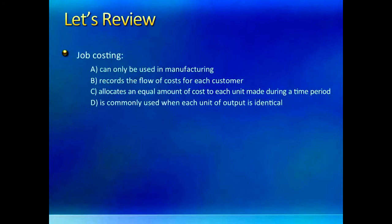The first question gives you four choices regarding job costing and wants you to pick what fits best. A is wrong because job costing can easily be used in non-manufacturing settings, for example in a doctor's office or a consultant's office. B is correct because job costing's main feature is to record the flow of cost for each job or customer. C and D both refer to process costing, so the correct answer is B.